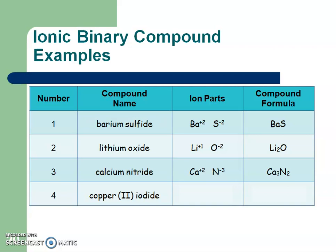For copper 2 iodide, the Roman numerals tell you the charge of copper directly, but you might need to look up iodide. Those charge numbers are different, so we crisscross them. Just as an aside: charge numbers are always high in the sky as superscripts, but when we crisscross them down to make them part of the compound, they become low to the ground — they become subscripts.